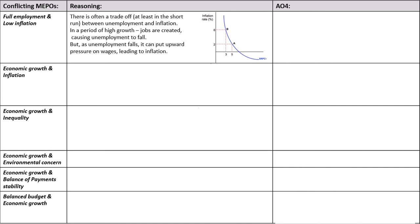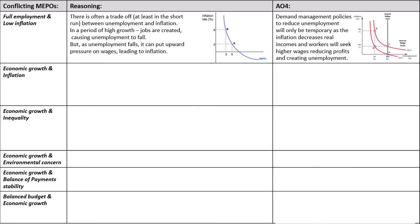Have a go at some AO4 points for these conflicting objectives. Hopefully you've drawn and thought about the long-run Phillips curve — that's on the screen there. In the long run, demand-side policies to reduce unemployment will only ever feed into higher inflation and return, through classical theory, to the NAIRU or the natural rate of unemployment.